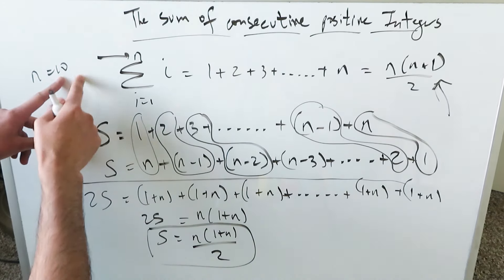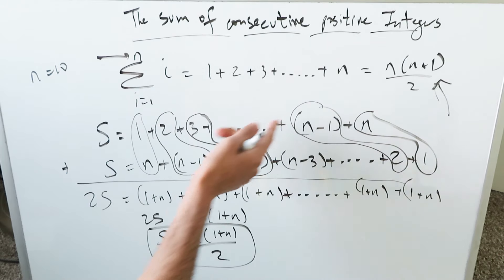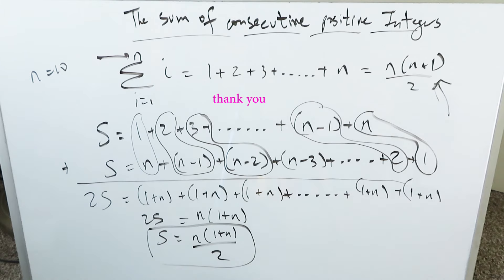You can do that for any number, like a thousand or whatever, a million. Just run it through that formula where your n value represents the actual number you're calculating up to, and your end result will be the sum of all the positive consecutive integers up to that specific value.